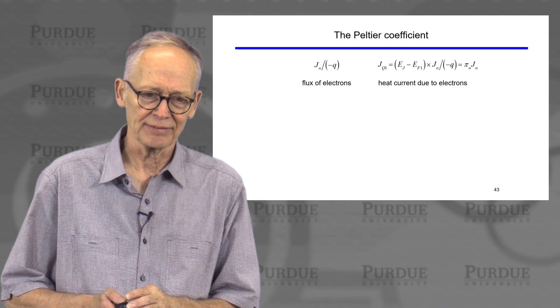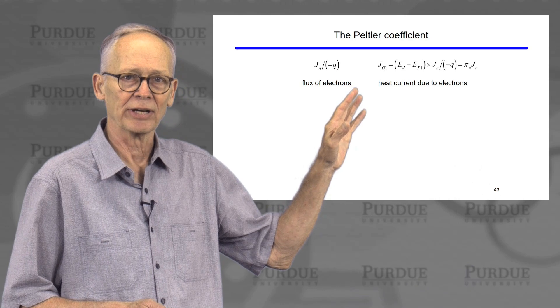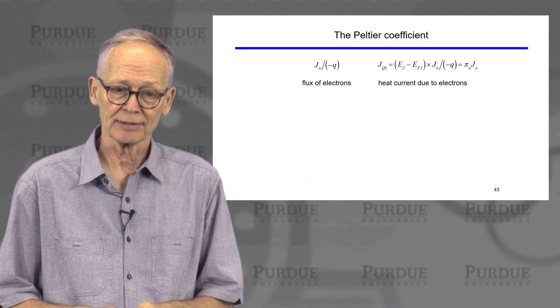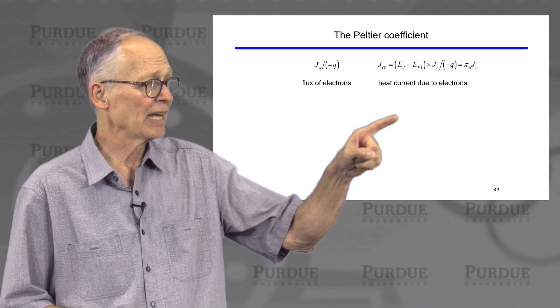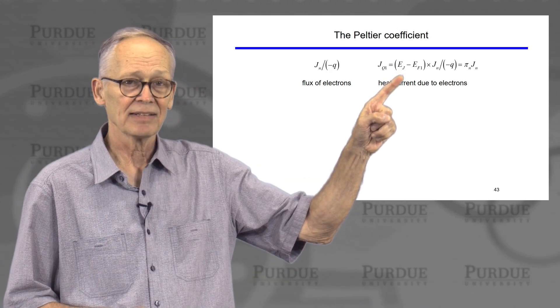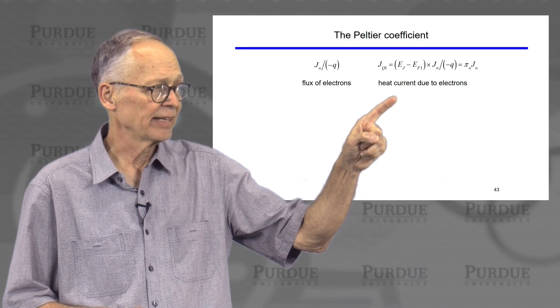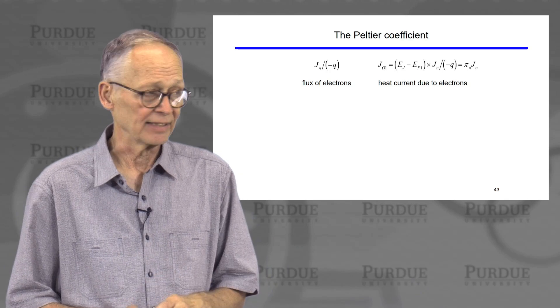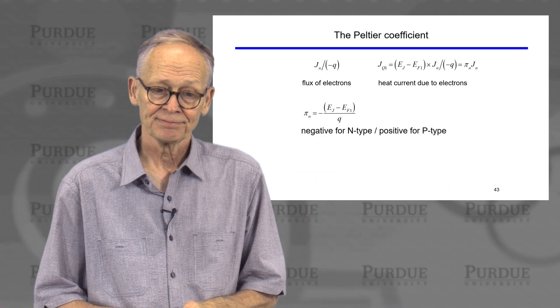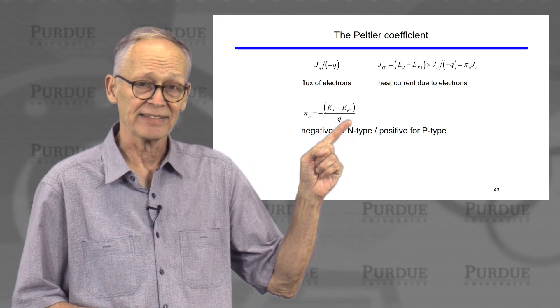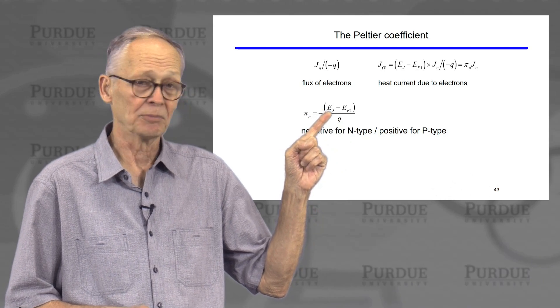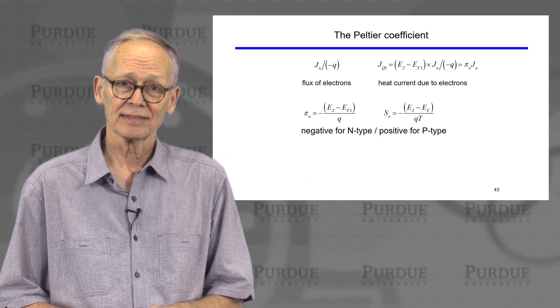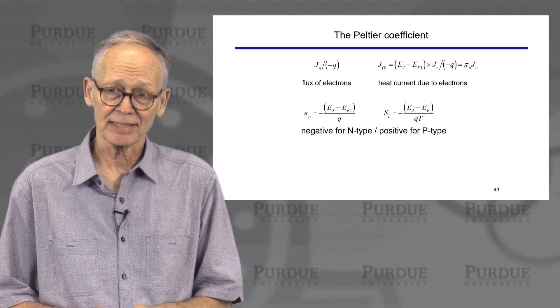We actually don't need very much mathematics to derive this. We have an electrical current flowing. I'm talking about an n-type semiconductor here just to be specific. So there is a flux of electrons that is flowing. The electrons carry their heat with them. So that flux of electrons times the heat, the heat that they carry, on average, they absorb a heat that is the average energy at which current flows with respect to the Fermi energy, and they carry that heat. So we have an expression for the Peltier coefficient. You can see that it's going to be negative for an n-type semiconductor because the current is flowing above the Fermi energy. It's going to be positive for a p-type semiconductor.